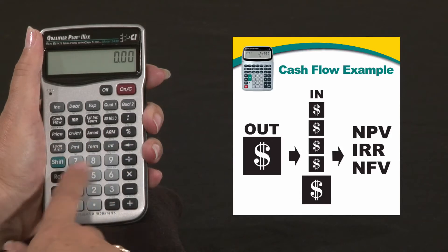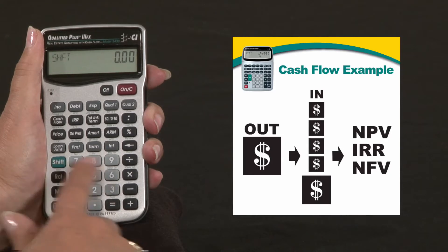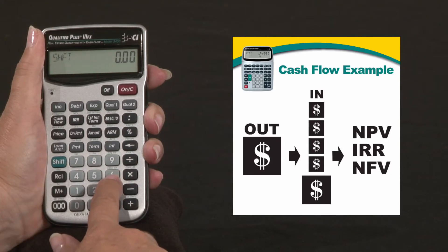So the first thing we're going to do is we're going to clear any prior cash flow calculations we might have in there by pressing Shift 6.